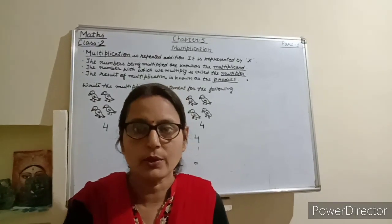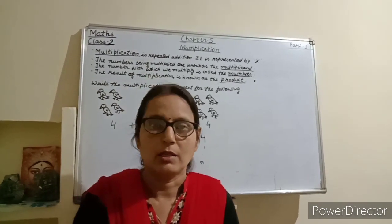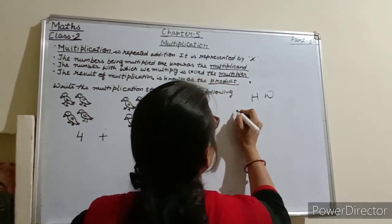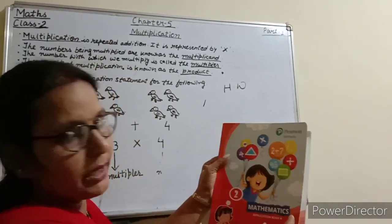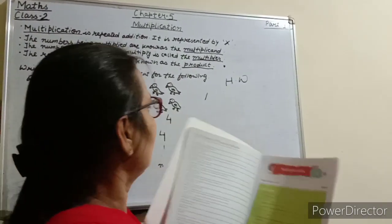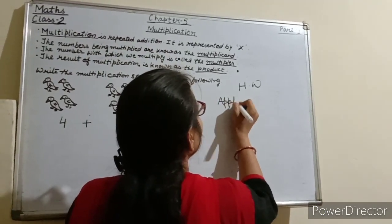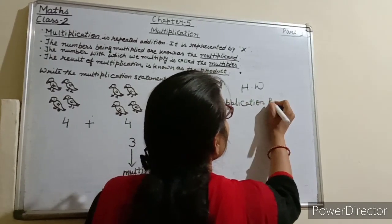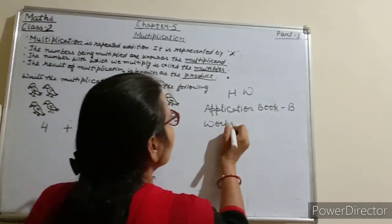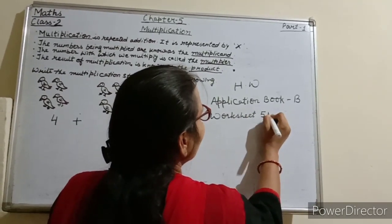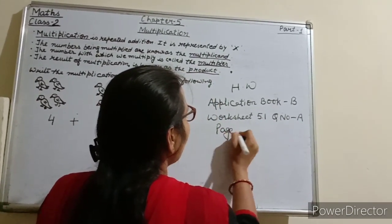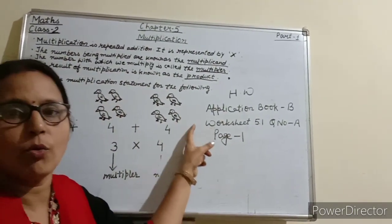So students, today I have taught you multiplication as repeated addition. Now students, note down your homework. Write application book B, 5.1, question number A, page number 1. This is your homework to do.